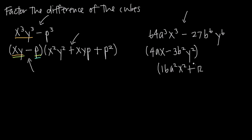We always add, and our middle term is both binomial terms multiplied together: 4ax times 3b squared y squared. 4 times 3 is 12, giving us 12ab squared xy squared. Then we always add again as part of our formula, and take the last term — 3b squared y squared — squared, giving us 9b to the fourth y to the fourth. Now we're done factoring the difference of these two cubes.